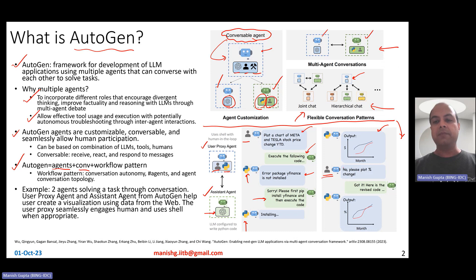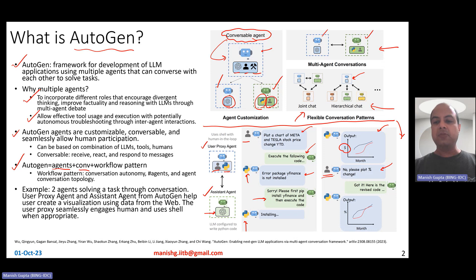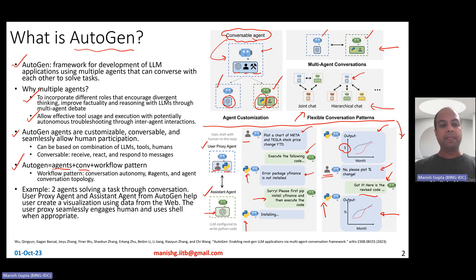When the user proxy agent gets the code, it uses the code executor to try to execute it. It may get an error — for example, that yfinance is not installed. Then the LLM agent can say, please first pip install yfinance and then execute the code. The code agent then installs it, runs the code, and outputs a nice chart. But then the human can play an authoritative role and say, please plot percent change rather than actual dollars. The LLM agent then gives the revised code, the code executor runs it, and here is the revised chart.